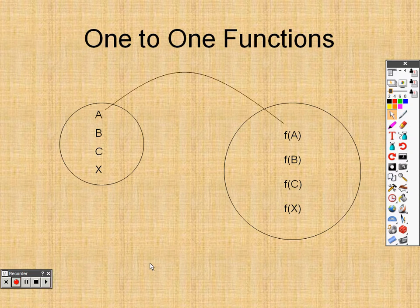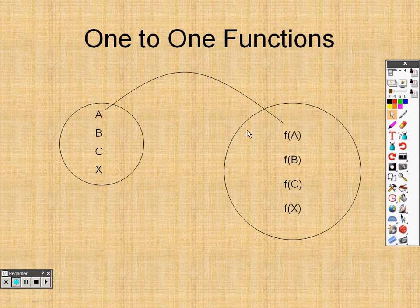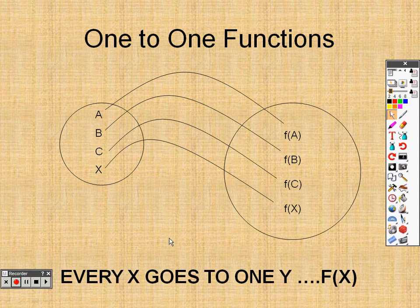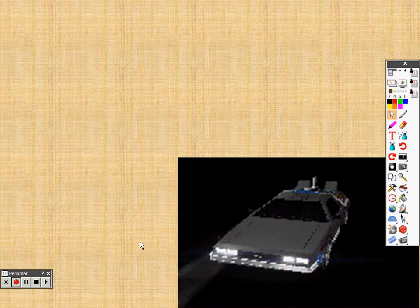Basically, we're going to first take a look at one-to-one functions. And basically what a one-to-one function is, it's saying whenever you plug in a value, you get out only one value. So if I plug in a B, I get one answer for B. If I plug in a C, I get one answer for C. If I plug in an X, I get one answer for X. So every X goes to one Y. That's what we're worried about here. That's what a one-to-one function is. Every X goes to one Y value.